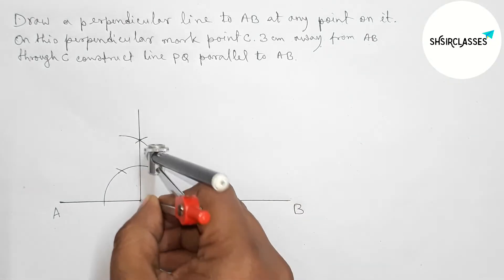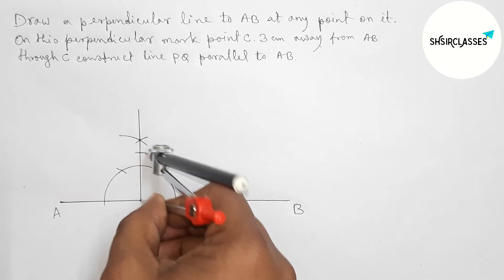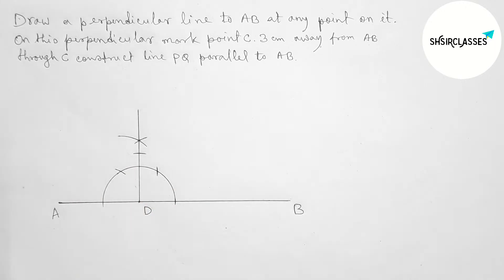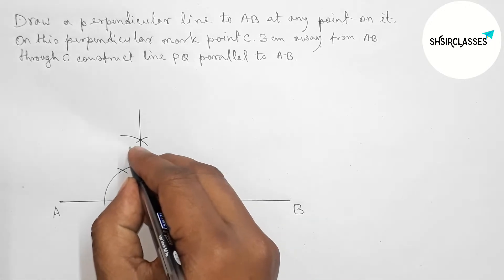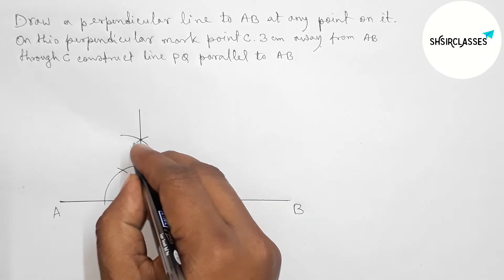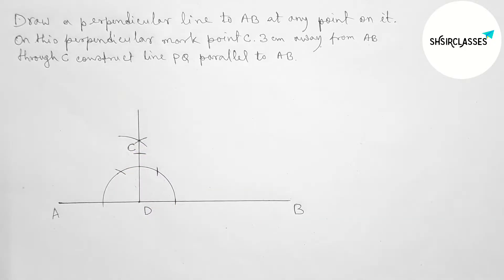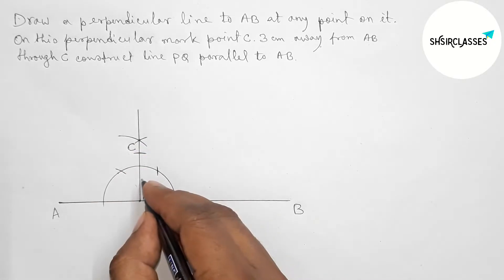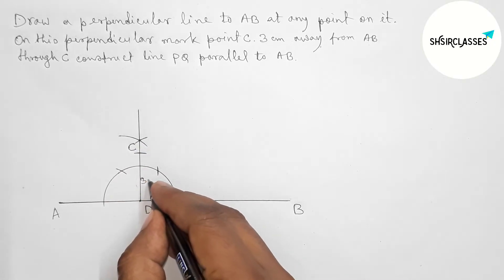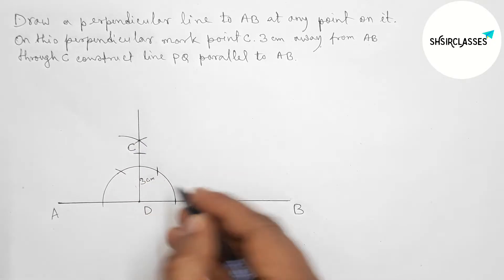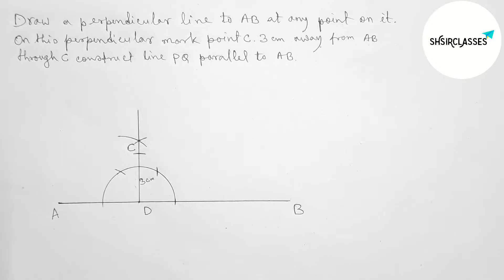Next, taking a three centimeter line segment with the help of ruler and compass. Putting the compass on point D and cutting the perpendicular here, so taking point C here. This is the three centimeter line.